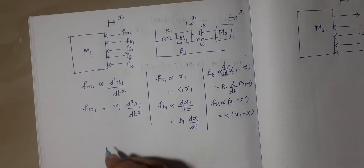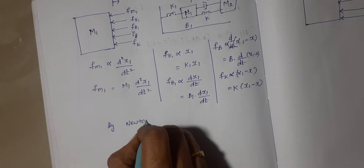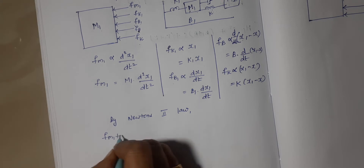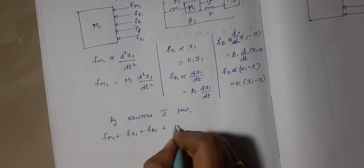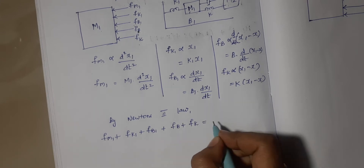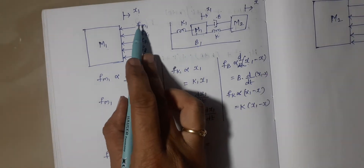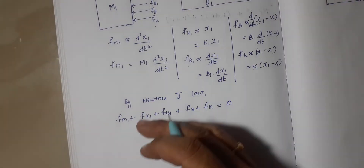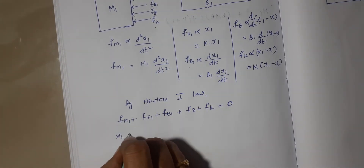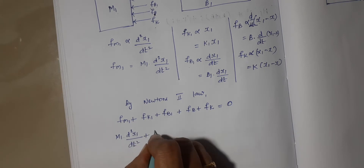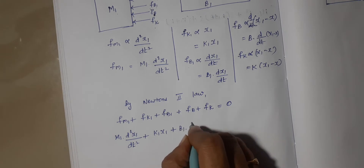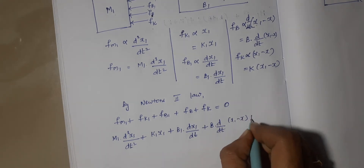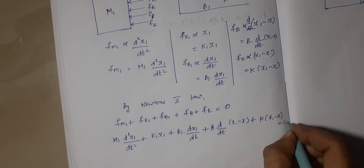Now I am going to apply Newton's second law, that is f = ma. Summing up the forces fm1 + fk1 + fb1 + fb + fk — there is no applied force directly on mass m1, so the applied force is 0 and these are all opposing forces. Substituting the values: m1·(d²x1/dt²) + k1·x1 + b1·(dx1/dt) + b·(d/dt)(x1 − x) + k·(x1 − x) = 0.